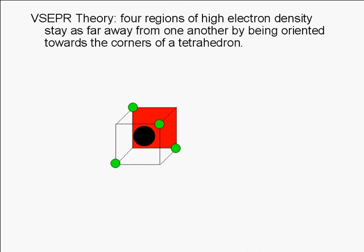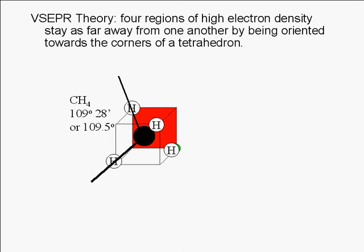What we have just drawn is a three-dimensional representation of the shape of methane. Carbon is in the middle of the tetrahedron, and each of the four corners of the tetrahedron has a hydrogen atom. If we trace a path from any corner of the tetrahedron through the center atom to another corner and measure the angle, we find that this angle is 109 degrees and 28 minutes. To the nearest tenth of a degree, it's 109.5 degrees.